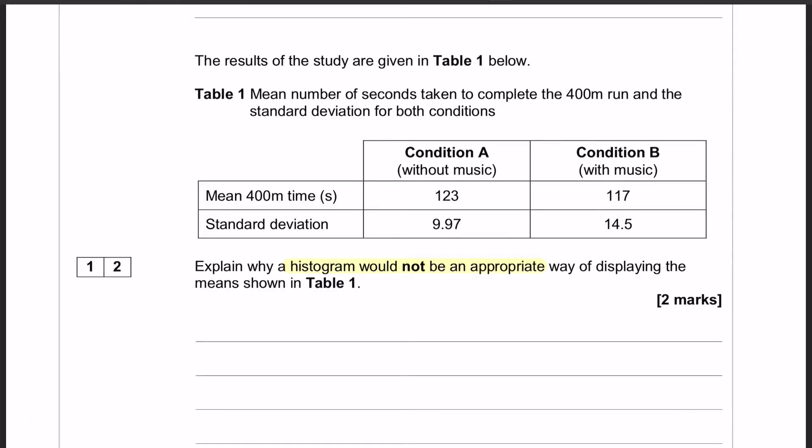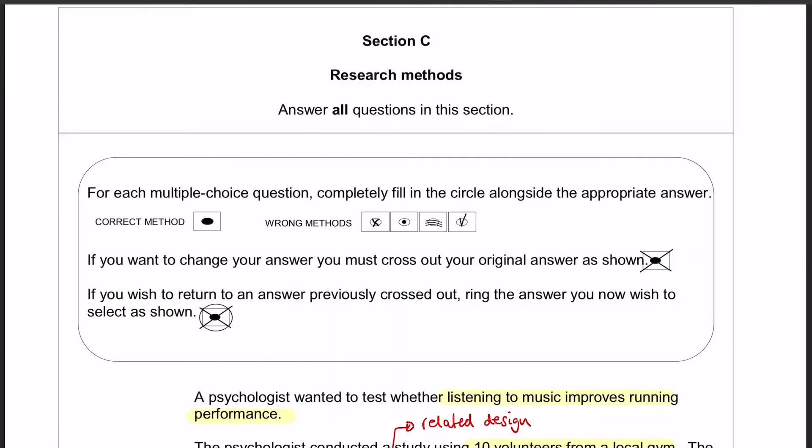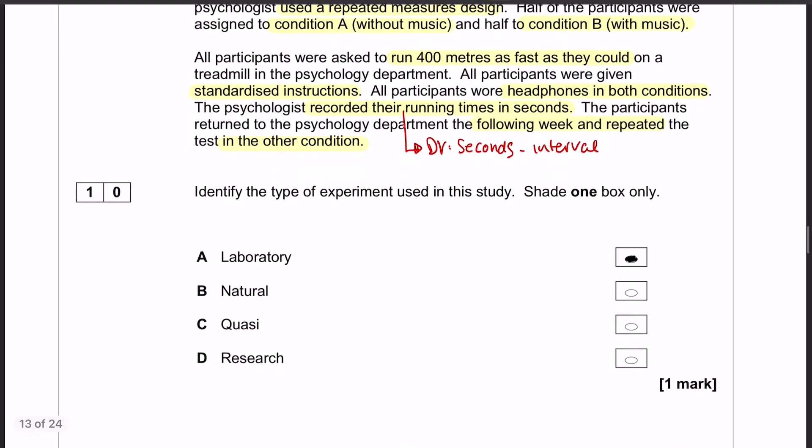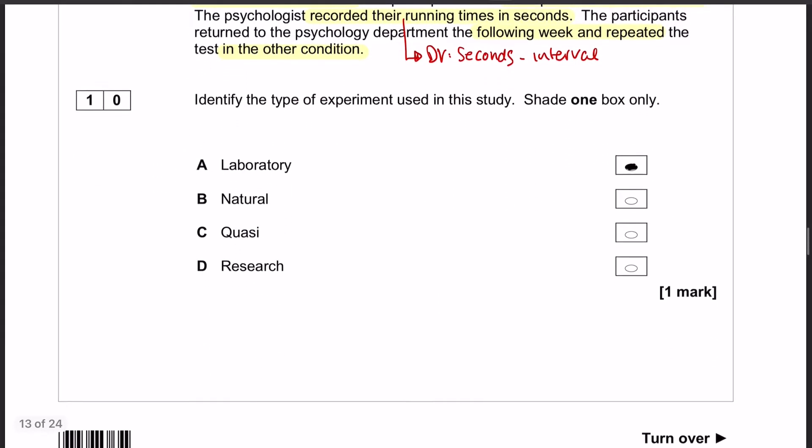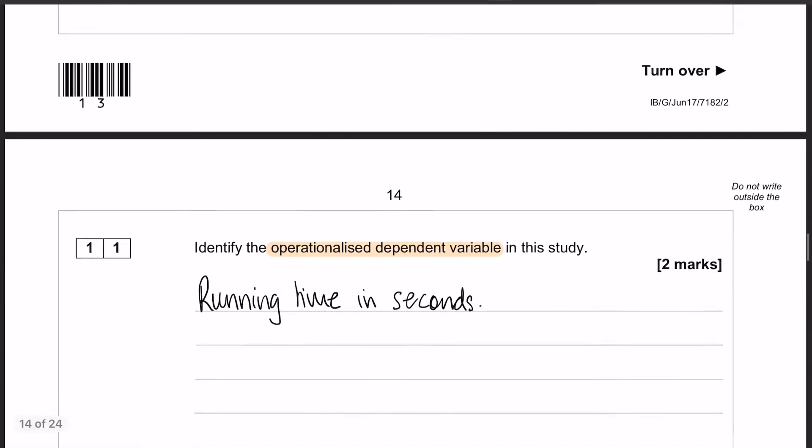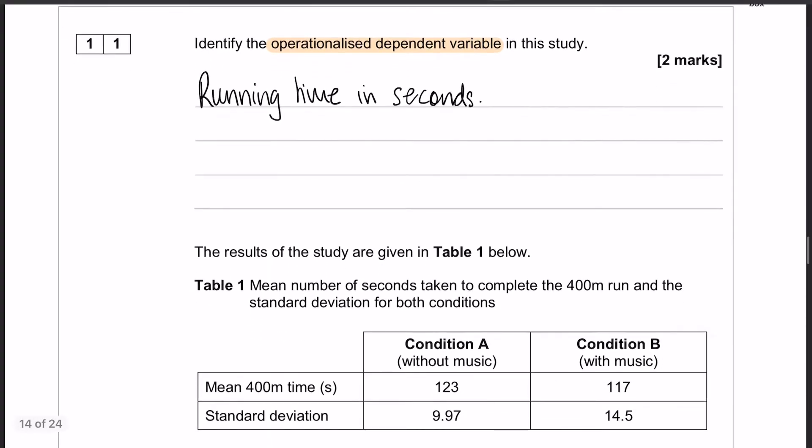Let's have a look at what those answers are going to look like. I already said that for question number 10 the answer was a lab study. Moving swiftly past that, the answer to question number 11 is running time in seconds. The question asks for the operationalized dependent variable.